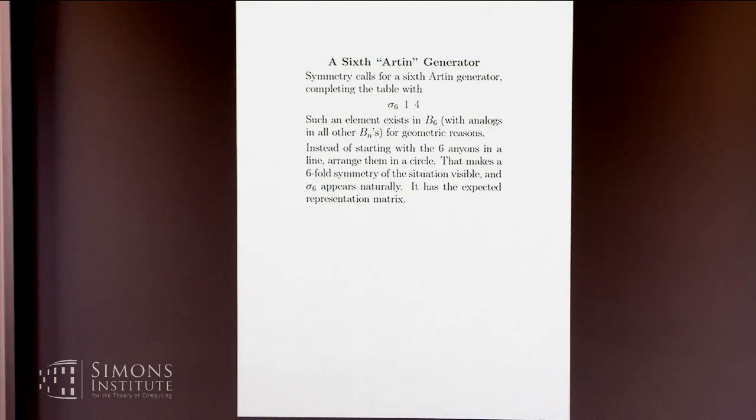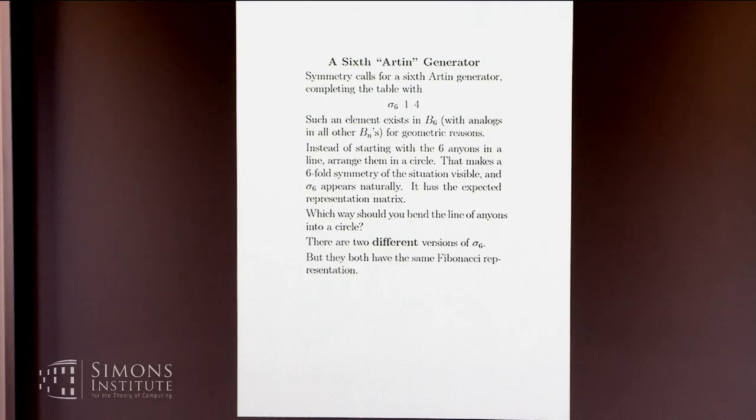And what I've written here is just a description of the red stuff. Instead of lining them up, wrap them around in a circle. That's not a full description though. I could have wrapped them around in a circle this way. Does it matter? It matters to the braid group. Those are different braid group elements that you get as the sixth analog of sigma 1 through 5. But fortunately they both represent the same thing in the Fibonacci representation.